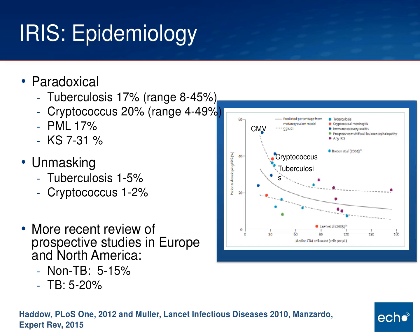Some data — some older, some newer — looking at the epidemiology of IRIS: older data suggests that for paradoxical IRIS, the relative rates are anywhere from 15 to 50 percent depending on the particular pathogen. Unmasking IRIS happens less frequently, maybe just a few percent for TB and for crypto. More recent studies suggest that in Europe and North America, for non-tuberculous IRIS, the rates are maybe 5 to 15 percent, and for patients who have TB and develop IRIS, it happens in a little bit higher percentage, up to 20 percent.